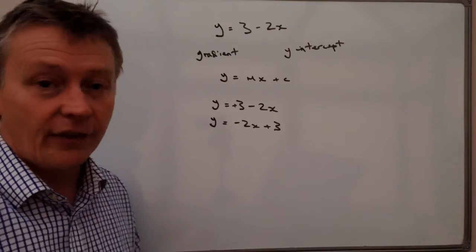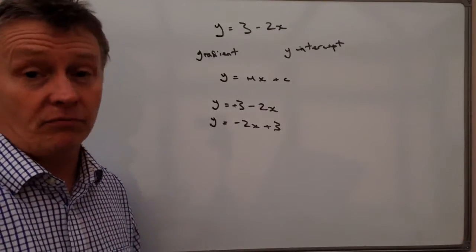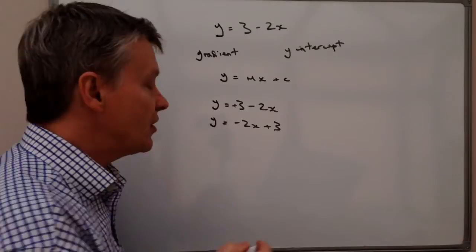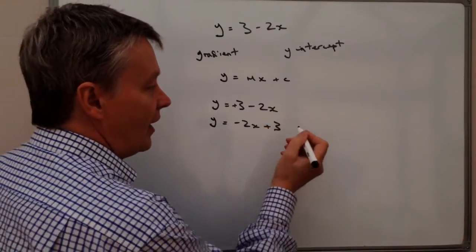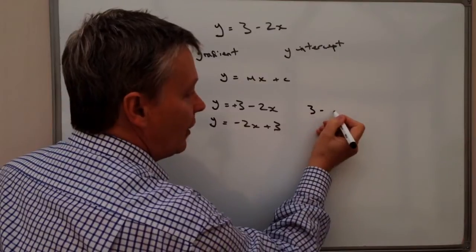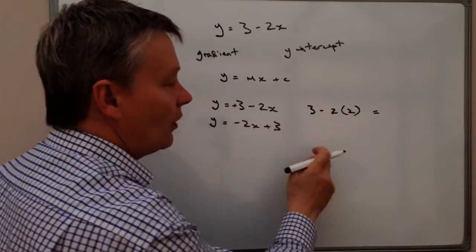So what I'll do is I'm going to just take a value of x as being two. So let's say if I had that value of two in there, I would have three minus two times two.